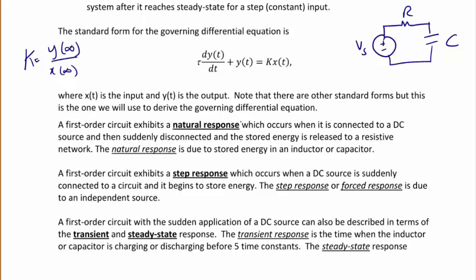A first order circuit exhibits a natural response, which occurs when it is connected to a DC source and then suddenly disconnected, and the stored energy is released to a resistive network. The natural response is due to stored energy in an inductor or capacitor. Typically, if you have a natural response, you will see a steady state value, such as the voltage across the capacitor after a long time, and then there will be an exponential decay related to that four time constant to get within 1% of the final value. A first order circuit also exhibits a step response, which occurs when a DC source is suddenly connected to a circuit and it begins to store energy. This is called the step response or the forced response, and the shape shows something that is exponentially increasing, such as to a final voltage across the capacitor or current through an inductor.